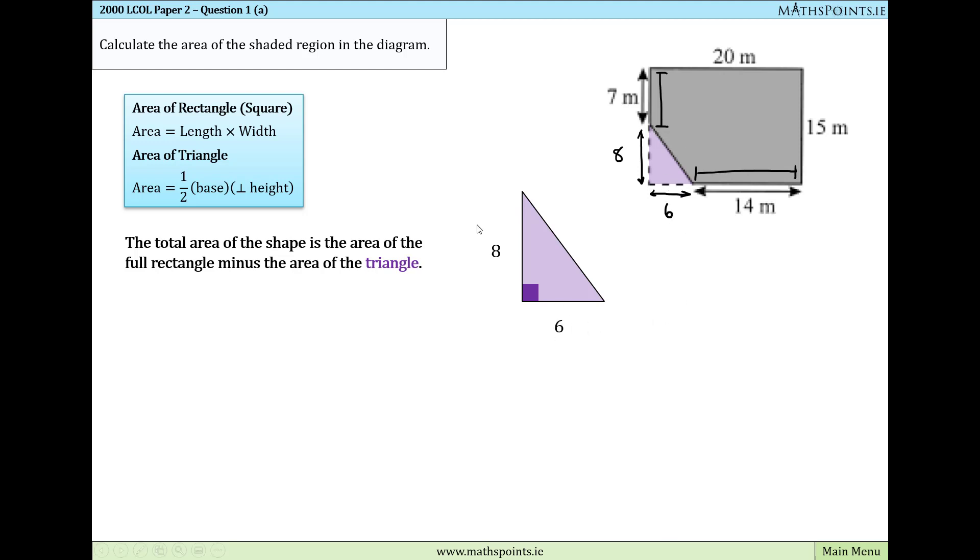We now have the base and the height of the triangle, so we're going to sub these into the formula. The area of the rectangle is going to be the length 20 times the width 15. The area of the triangle is going to be half the base, which is 6, by the perpendicular height, which is 8.